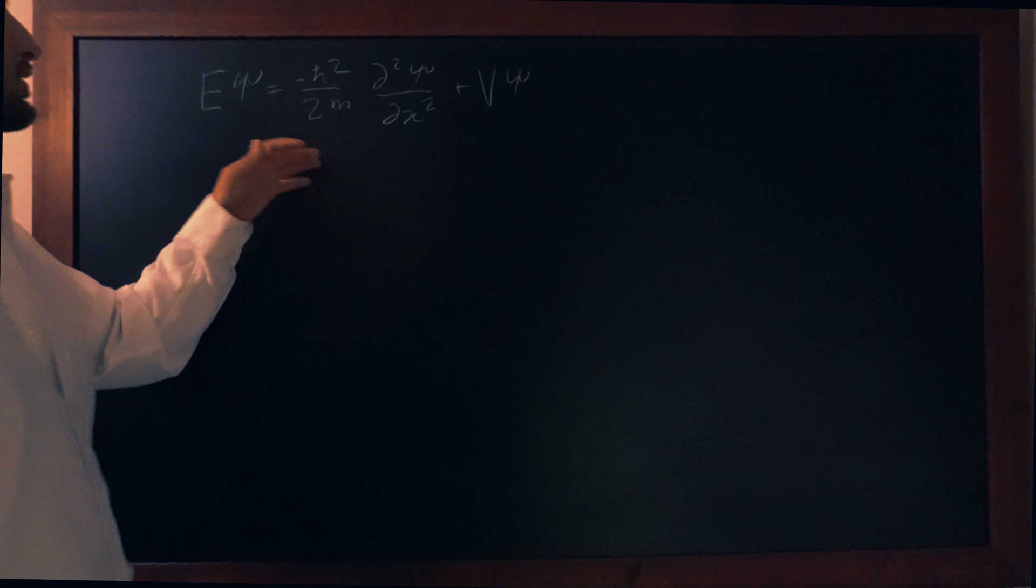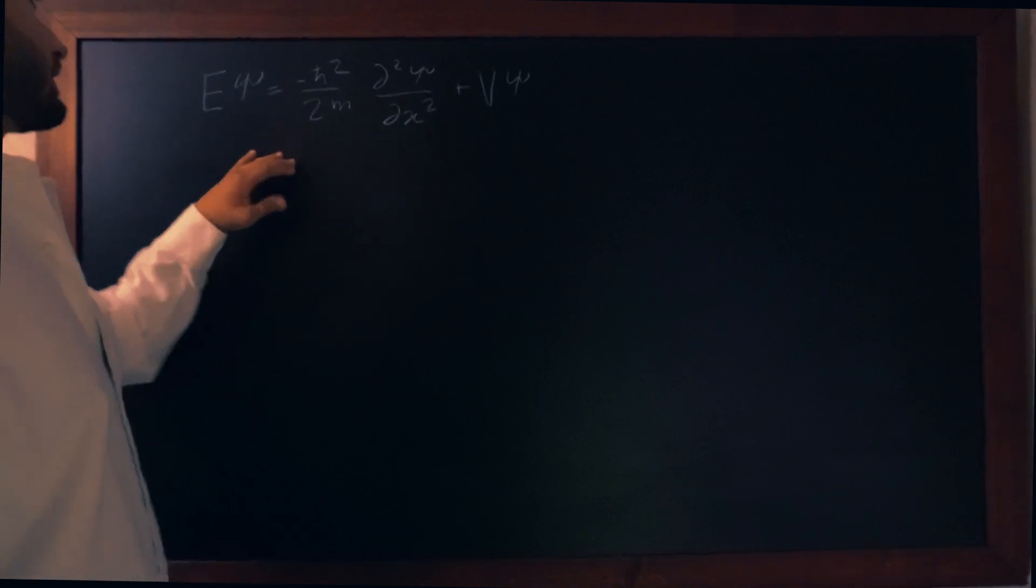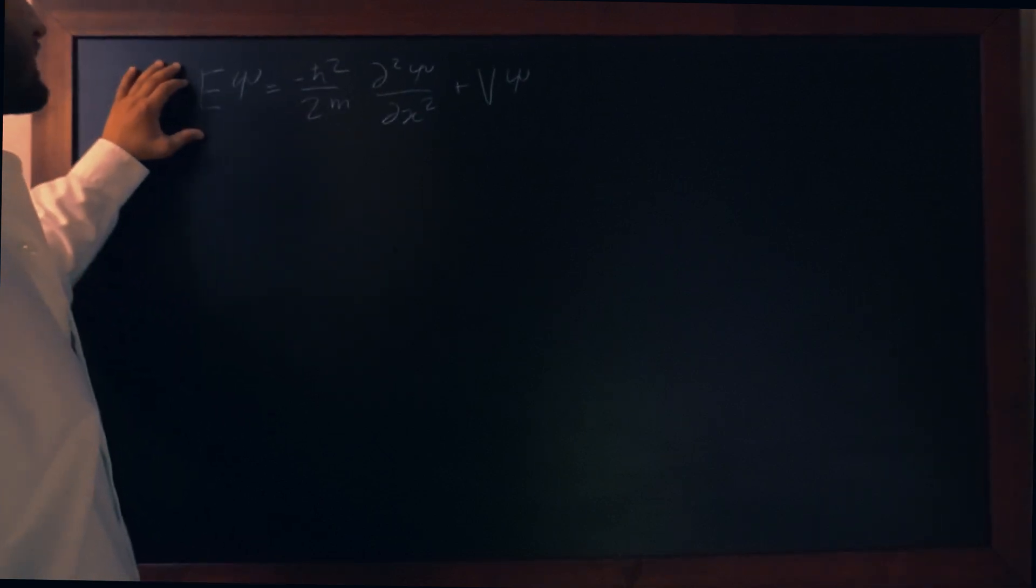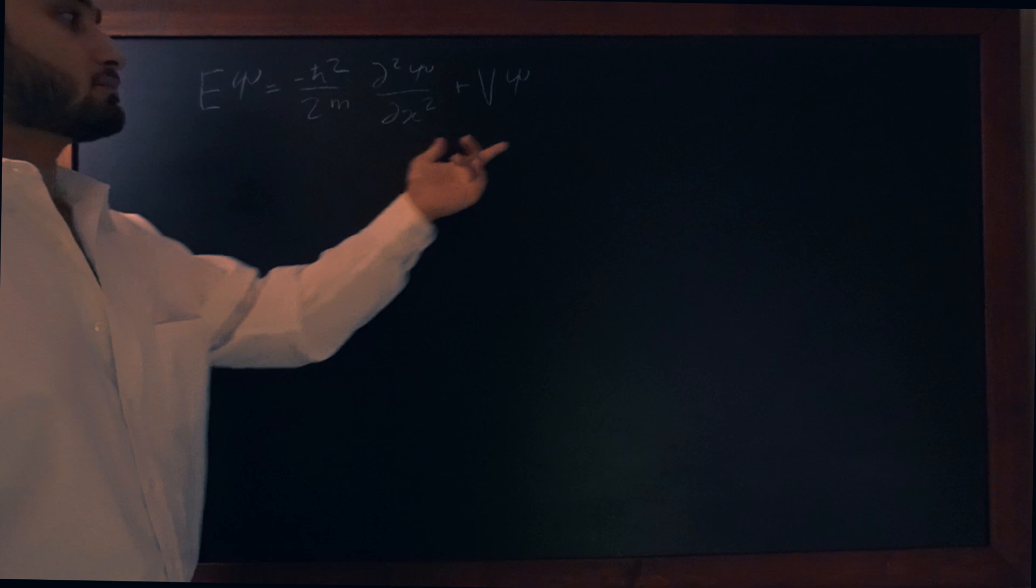I'm going to write the time-independent Schrödinger equation. So we can break this down into saying that the total energy of a system is equal to the kinetic energy plus the potential energy.